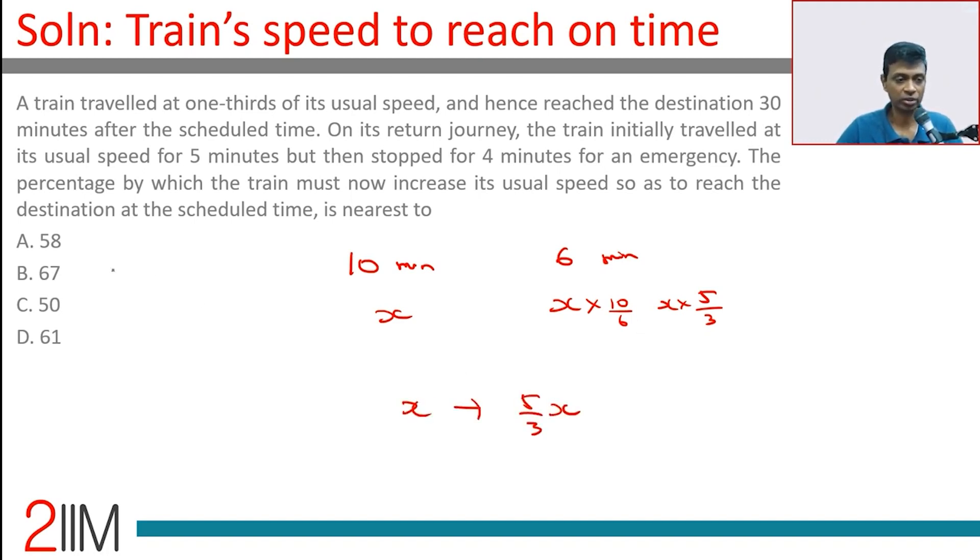An increase of two-thirds of x or 67%. It's a beautiful question because you're just thinking in terms of ratios and you're through. You don't need distance by time or speed formulas. Just think in terms of ratios.